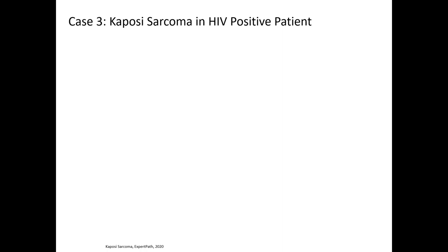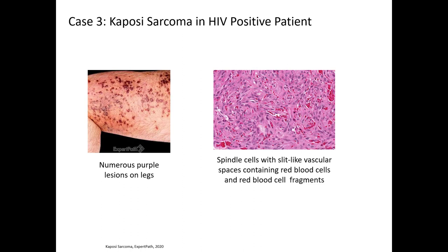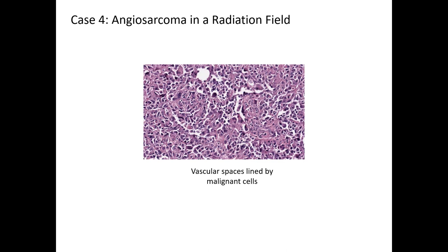Case 3 is Kaposi's sarcoma in an HIV-positive patient. Here is the gross picture which demonstrates numerous purple lesions on the legs. Even though this photograph only shows one leg, Kaposi's sarcoma is generally symmetrical and you would also see these lesions on the other leg. This is the histology which demonstrates spindle cells with slit-like vascular spaces which have red blood cells and red blood cell fragments. Case 4 is angiosarcoma in a radiation field. This is a high power which demonstrates vascular spaces lined by malignant cells.